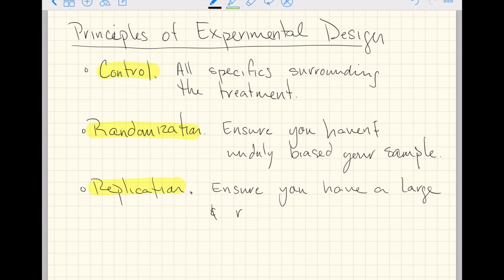You want to ensure you have a large, as large as you can make the sample, and representative sample. Statistics is all about making statements about the population from a sample. What we're really trying to say with the word replication is your sample can't be too small. It needs to be a fairly large sample. We will look into defining how large is large enough later on.